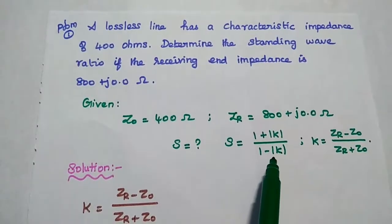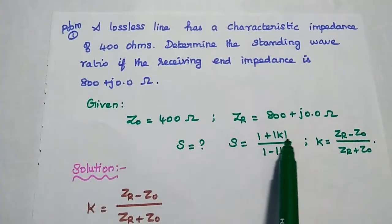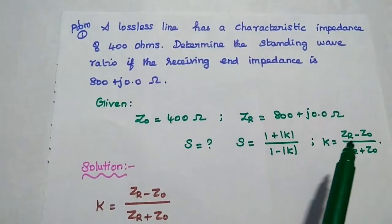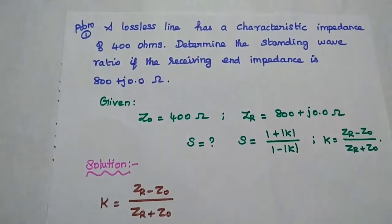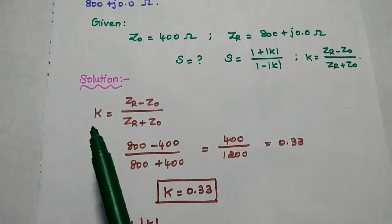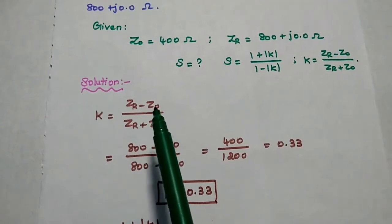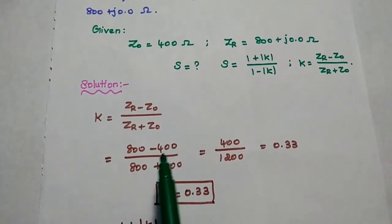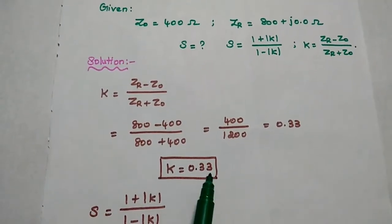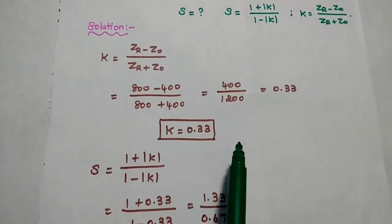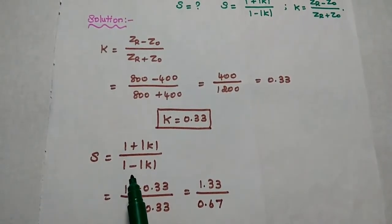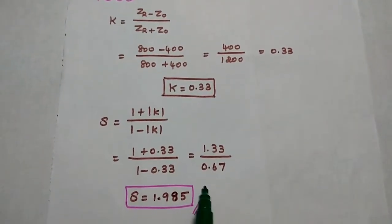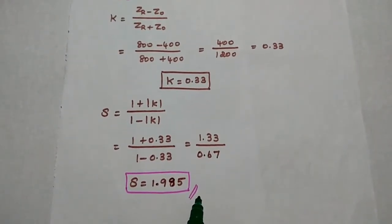S is equal to 1 plus K divided by 1 minus K. We have to find K first, then substitute into the formula. K is equal to ZR minus Z0 divided by ZR plus Z0, which gives 800 minus 400 divided by 800 plus 400. The K value is 0.33. Substituting: S equals 1 plus 0.33 divided by 1 minus 0.33, which equals 1.985. This is the answer.